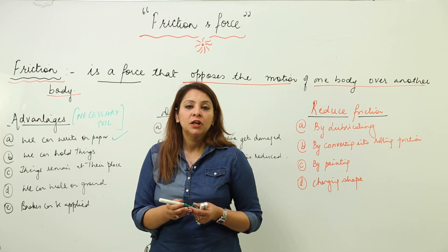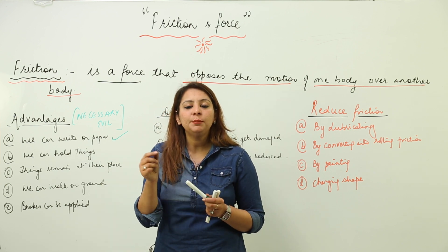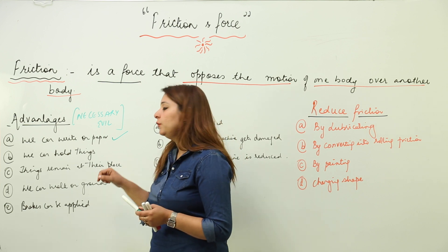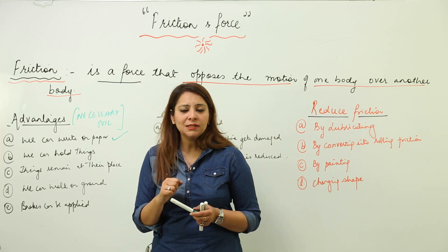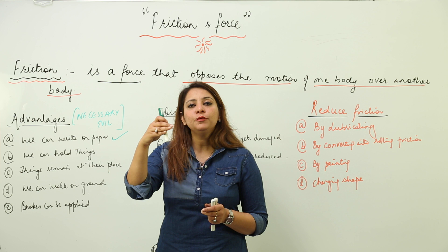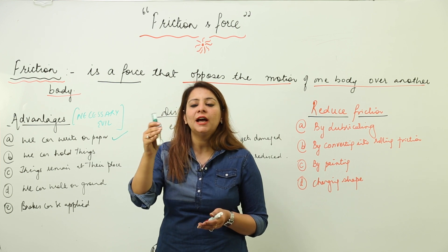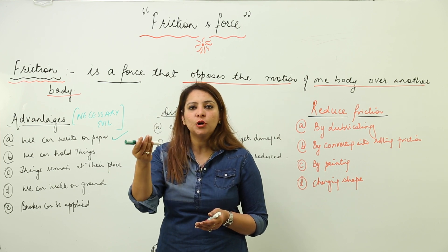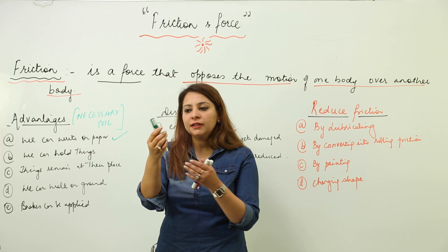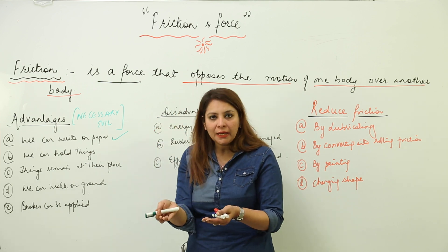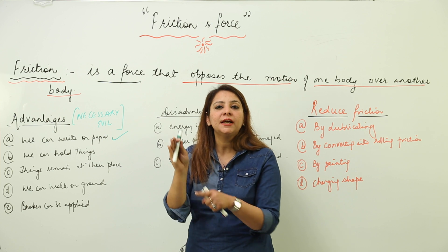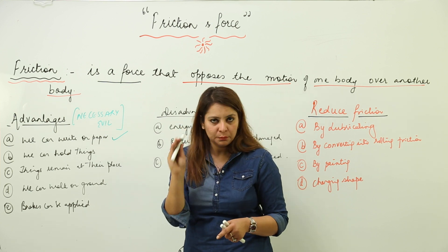There is friction between the pen and paper that enables us to write. Second, we can hold things. Suppose I am holding a marker — if there were no frictional force, it would not be possible to hold it; it would slip from my hand. So it is the friction between my hand and the marker that lets me hold it.